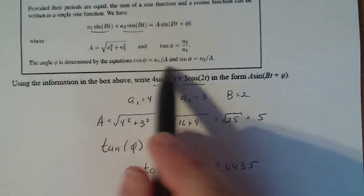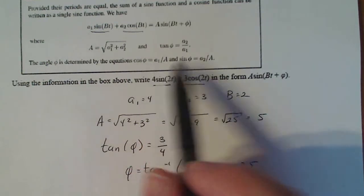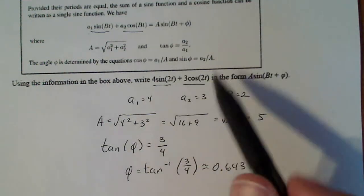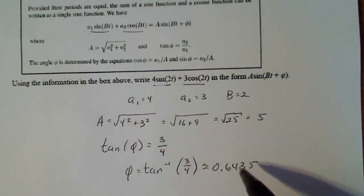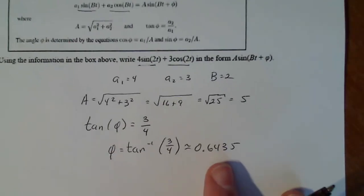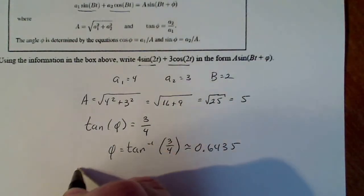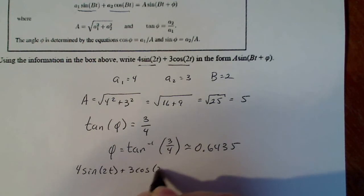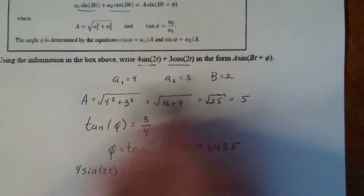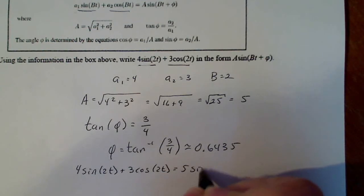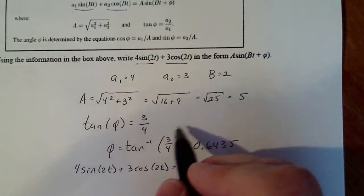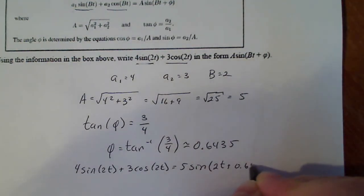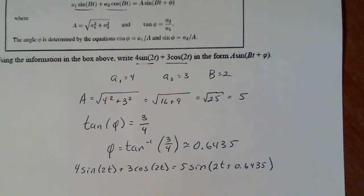So that's what phi is. And you can use these other two here to test to see if you're right. You can do a1, which is 4 over 5, and then see what the cosine inverse is, but we're fine with just this. So in the end, if I use my formula, I have that 4 sine of 2t plus 3 cosine of 2t is equal to capital A, 5 sine of bt, or in our case 2t, plus phi, which is 0.6435. All right, everyone.